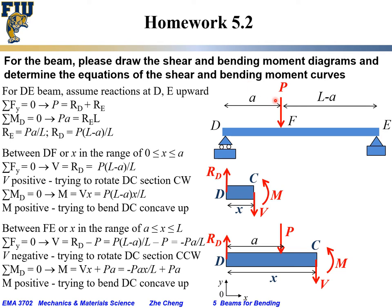It's a simply supported beam with a concentrated load P at a distance A from the D side and at a distance L minus A from the E side, with total length L. To get the shear and bending moment diagrams, we first go back to statics to determine the reaction forces. Assuming vertical reactions RD and RE at D and E both pointing upward — there are no reaction moments due to the hinge and roller connections.